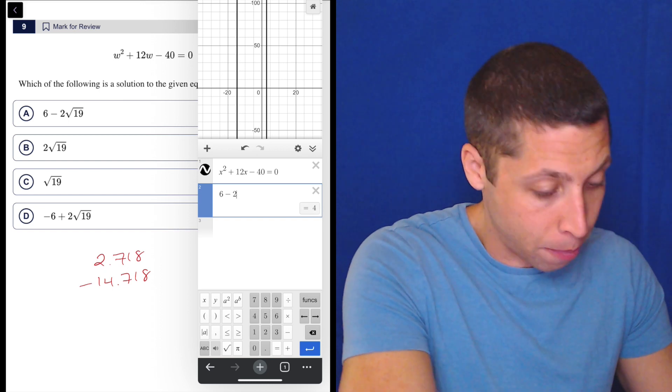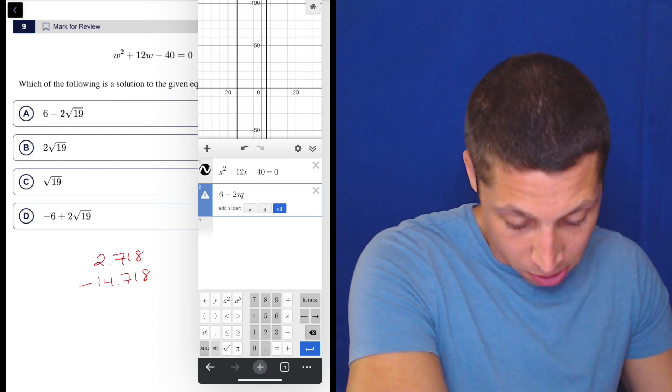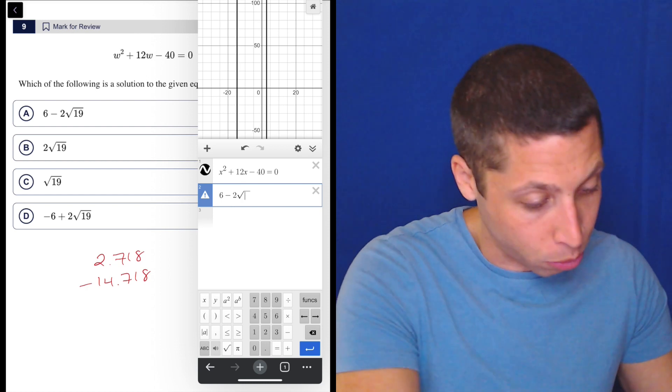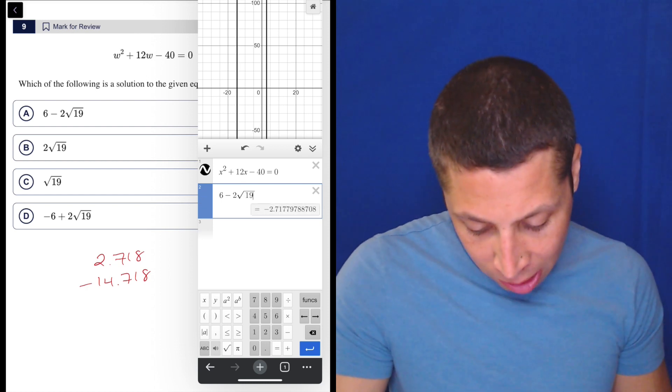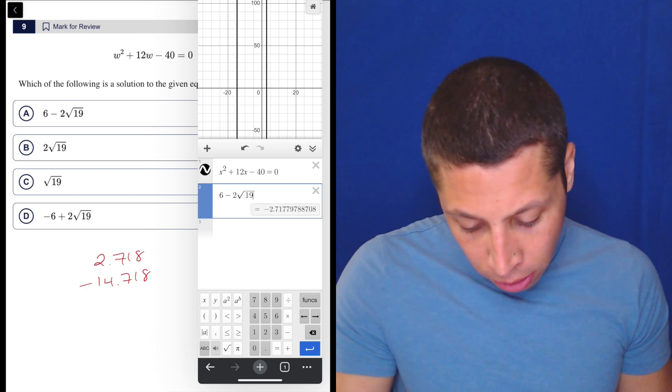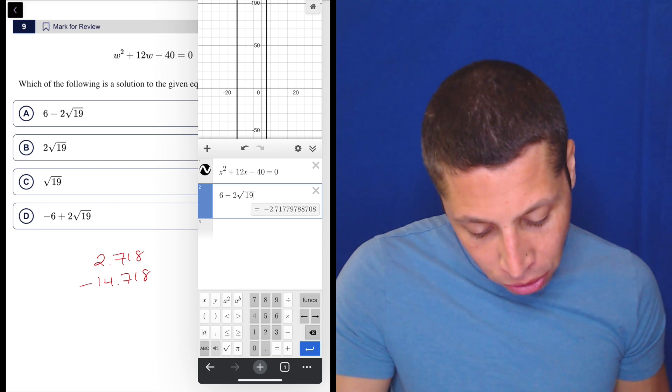So two, and if you type SQRT, it's gonna automatically make it into a square root. And then that gives me a decimal. But notice it's close to one of them, right? It's close to the top one, but it's the wrong symbol, right?